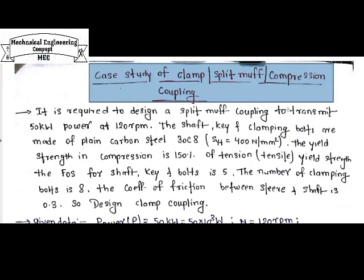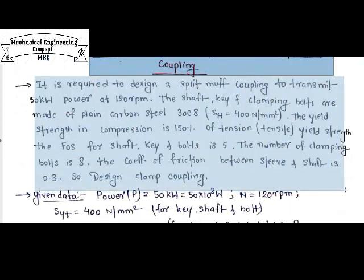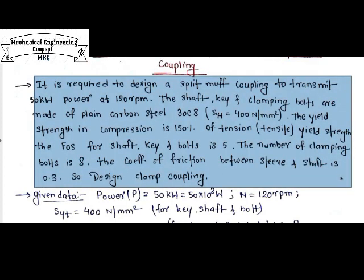In previous lectures, I already discussed the design procedure of clamp coupling or compression coupling. So in this lecture, I am going to discuss a case study. We have a given statement: it is required to design a split muff coupling to transmit 50 kilowatt power at 120 rpm. The shaft, key, and clamp bolts are made of plain carbon steel 30C8 with SYT of 400 N/mm². The yield strength in compression is 150% of the tensile yield strength. The factor of safety for the shaft and key bolt is 5. The number of clamping bolts is 8, and the coefficient of friction between sleeve and shaft is 0.3. Design a clamp coupling.